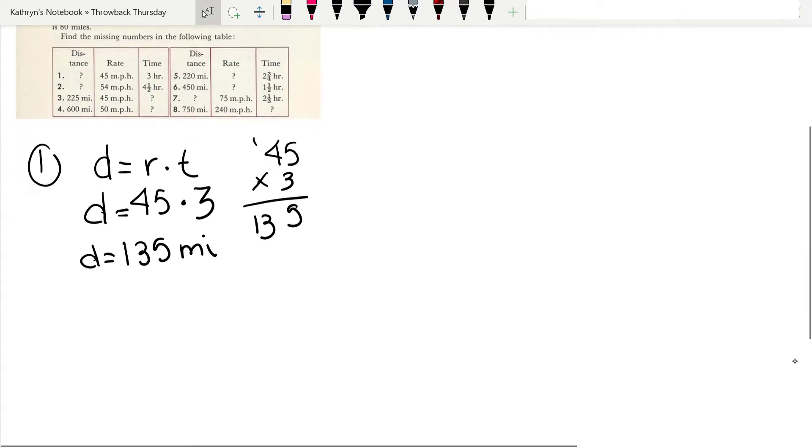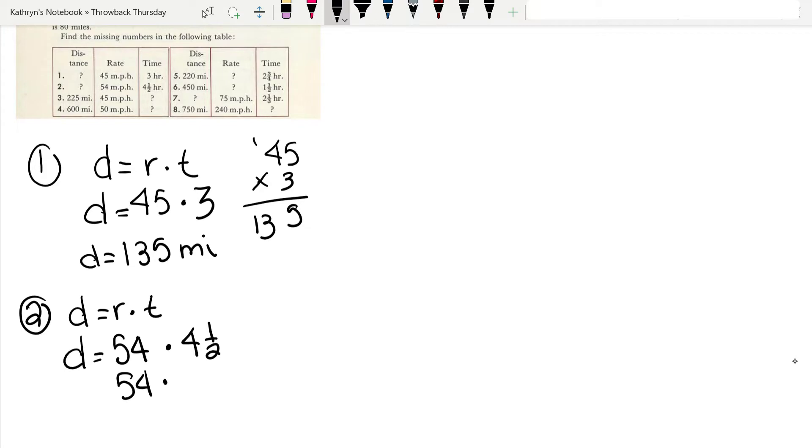Let's look at number 2. d equals r times t. We don't know the distance, but we know that the car is traveling 54 miles per hour times 4 and a half hours. I know some of you are freaking out because it's a fraction, but don't freak out. 2 times 4 is 8, plus 1 is 9. I'm going to change it to an improper fraction: 9 over 2. What's really cool is 54 and 2 are even numbers, so I'm going to cancel those. 54 divided by 2 is 27.